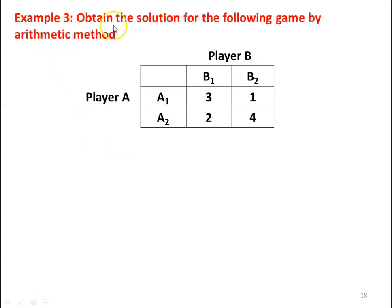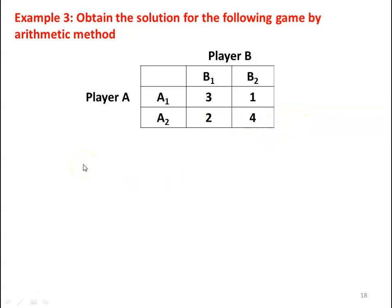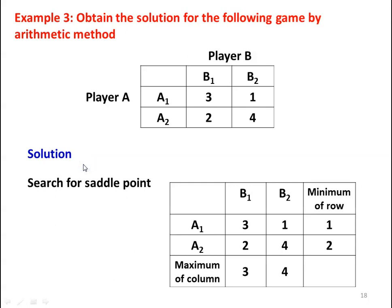Example number 3: obtain the solution for the following game by arithmetic method. There are two players, player A and player B. Player A has two strategies A1 and A2; player B has two strategies B1 and B2. The payoff matrix cell values are: A1 row — 3, 1; A2 row — 2, 4. We have to solve the game by arithmetic method.